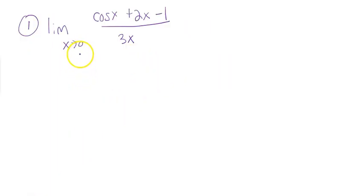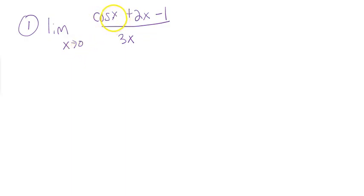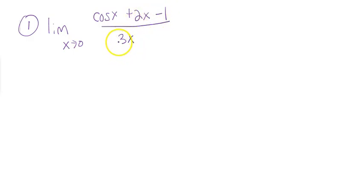For my first example, I want to show you a situation where we can use L'Hôpital's rule. So if you first plug in 0, the cosine of 0 is 1, plus 2 times 0 would be 0, then minus 1. 1 minus 1 would be 0 on top. 3 times 0 would be 0 on the bottom. So this would be a 0 over 0 indeterminate form.